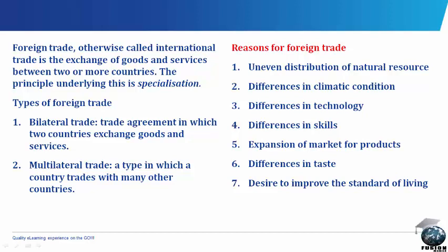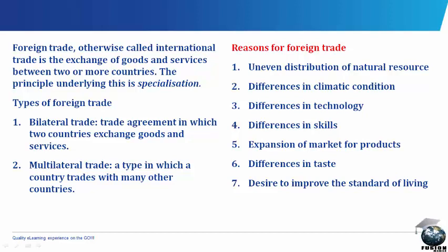Reasons for Foreign Trade: Countries engage in international trade for various reasons, which include uneven distribution of natural resources. Because natural resources are unevenly distributed, some countries are naturally blessed while others have little or no natural resources — this necessitates international trade. We also have differences in climatic conditions. The climatic condition of the Earth varies from one region to another, and this variation gives rise to the growth of different crops, prompting the need for exchange.